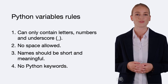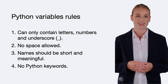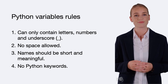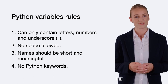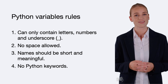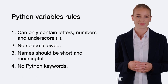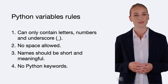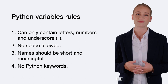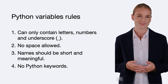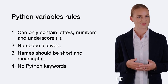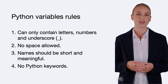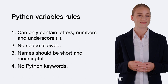The following are the rules of giving names to variables in Python. 1. Variables can only contain letters, numbers, and underscore. 2. No space allowed. 3. Names should be short and meaningful.